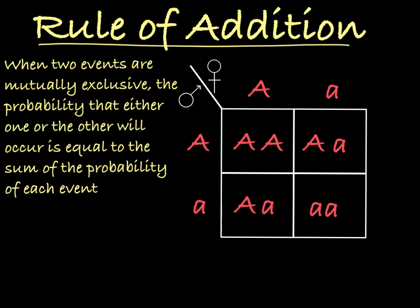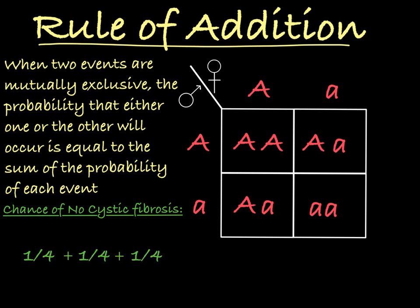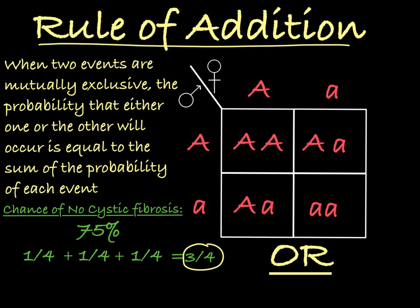So here we see that there are three possible gamete combinations that will result in a child having a phenotype without cystic fibrosis. The probability of this happening, or this happening, or this happening, is equal to the sum of the probabilities of each individual event — one-fourth plus one-fourth plus one-fourth. So anytime you're asking what is the probability of this or this happening, you know that you'll be adding those probabilities together. In this case, the parents have a 75% chance of having a child without cystic fibrosis.